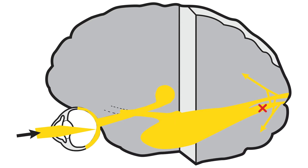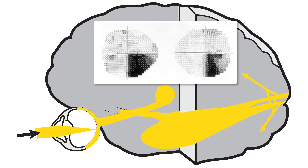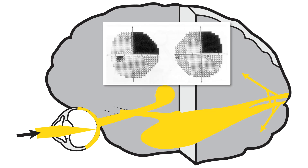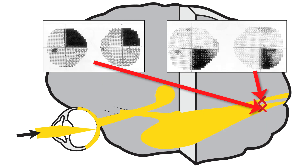Lesions of the primary visual cortex often selectively involve the upper or lower banks of the primary visual cortex. One border of the visual field will be aligned to the vertical meridian, the other to the horizontal meridian — such visual field defects are called homonymous quadrantinopias. Damage to the superior primary visual cortex produces inferior homonymous quadrantinopias, while damage to the inferior primary visual cortex produces superior homonymous quadrantinopias. Homonymous quadrantinopias are always caused by primary visual cortex lesions.